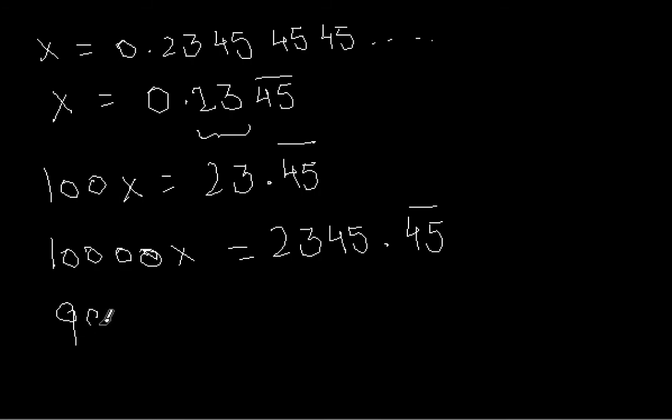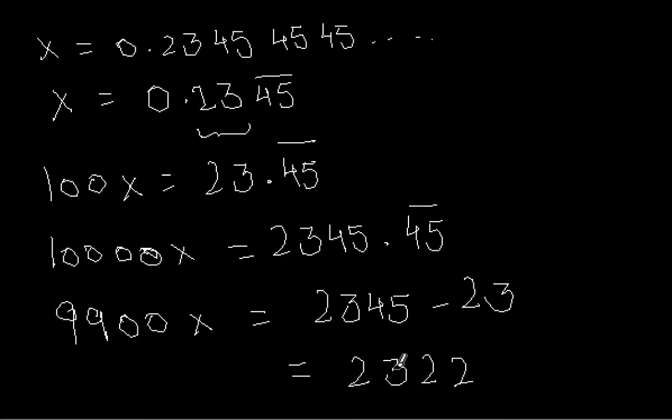We will have 9900x = 2345.45 bar minus 23.45 bar, and the recurring part gets cancelled out. Here we are left with 2322 on the right-hand side.